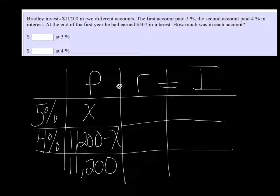Because whatever he put in one account, we'd have to subtract that from the total to get how much went into the second account. For example, if he put just $200 in the 5% account, then he would have put $11,000 in the other account.